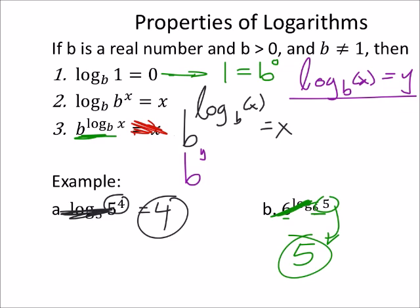But at the same time, from this logarithmic equation right here, we can change it to exponential form, which would be b to the power of y equals x. So we know that b to this power of y is x.